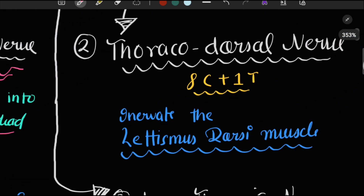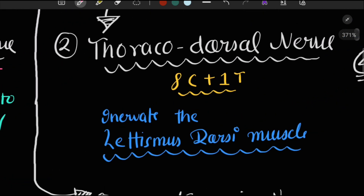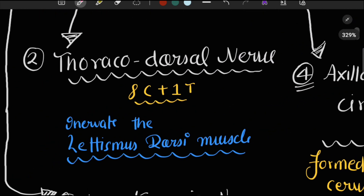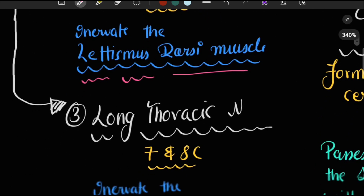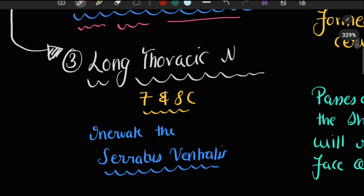The second branch is the thoracodorsal nerve, which is formed by the eighth cervical spinal nerve and the first thoracic spinal nerve. It supplies the latissimus dorsi muscle.